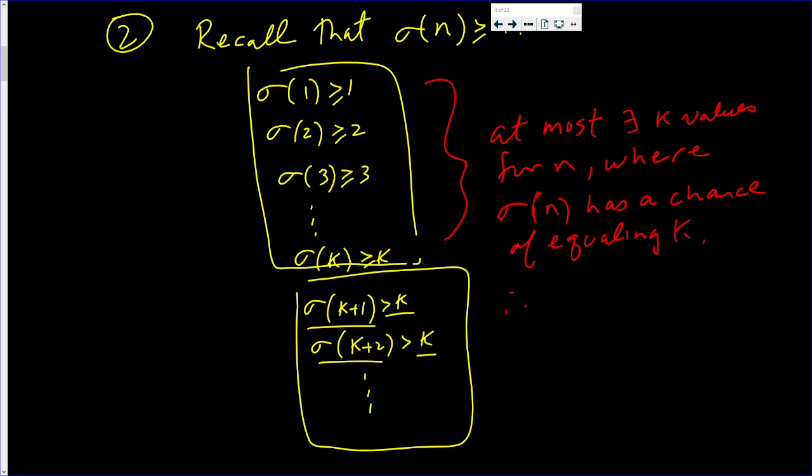Therefore, there are finitely many n's with sigma of n equaling k. I listed all the possibilities. Maybe they'll equal k, maybe they won't equal k. But there's at most k of them. Okay, so that completes this proof.